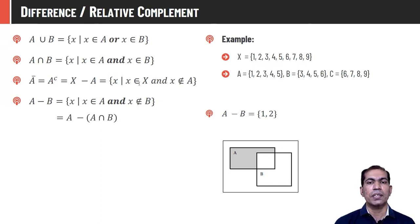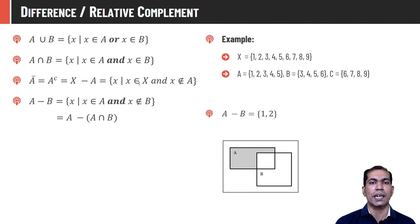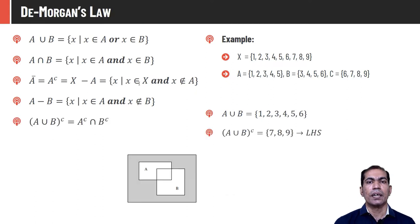The graphical representation shows that after subtracting the common elements of A and B from set A, the remaining gray area represents A − B.